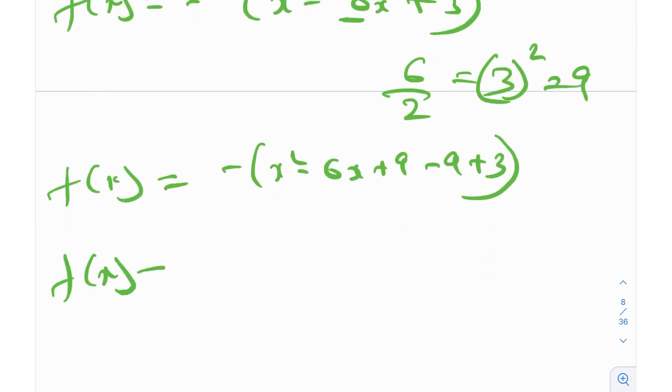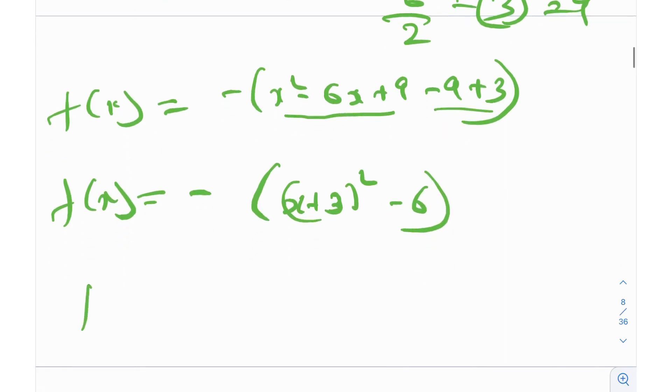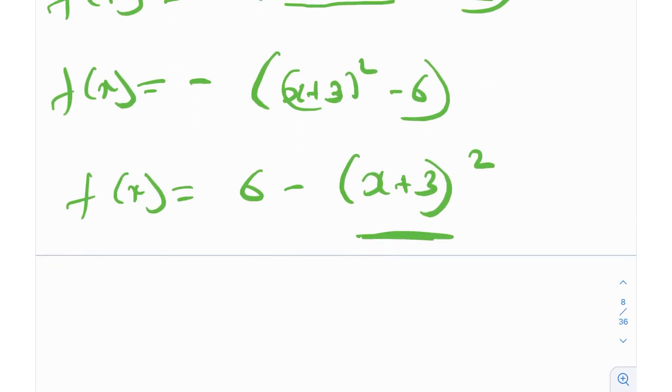So you'll get f(x) as negative of (x² - 6x + 9) is (x + 3)², and this becomes -9 + 3 is -6. So f(x) essentially becomes 6 - (x + 3)². Now you notice that this is a squared term, so this is always going to be positive, and you are always going to be subtracting positive quantity from 6.